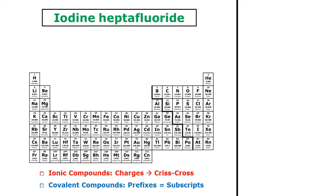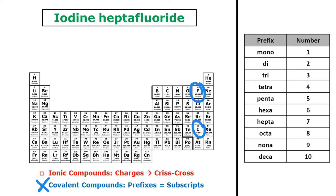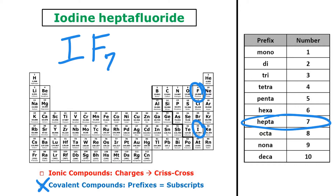We'll start with iodine heptafluoride. Iodine is a nonmetal and heptafluoride is also a nonmetal, so I'm looking at a covalent compound — I can see those prefixes in the name. Iodine is I with no prefix, which means I only need one. Then heptafluoride: F, and hepta is the prefix for seven. So iodine heptafluoride has the formula IF7.